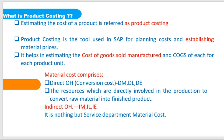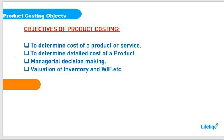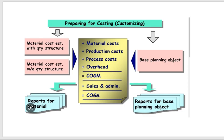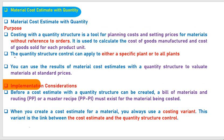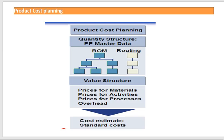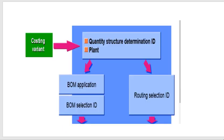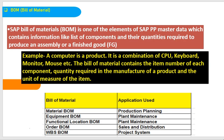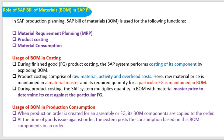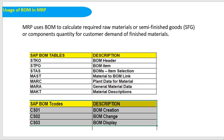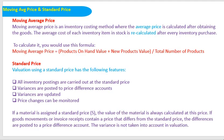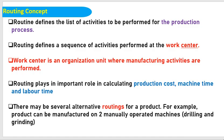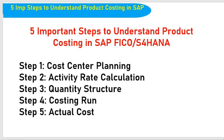So far what we have discussed includes: What is Product Costing, Objectives of Product Costing, Preparing for Costing, Product Costing Integration, Material Cost Estimate with Cost Component Structure, Product Cost Planning, Costing Variant and BOM, Role of BOM in SAP PP Module, Usage of BOM in MRP, Moving Average Price and Standard Price, Routing Concept, and Five Important Steps to Understand Product Costing in SAP.